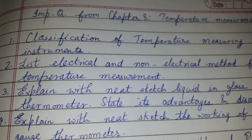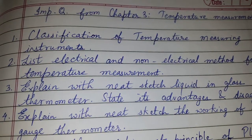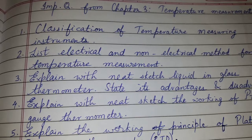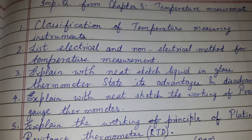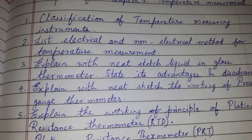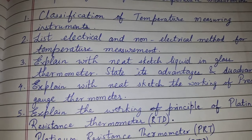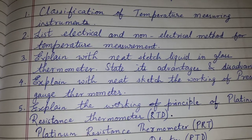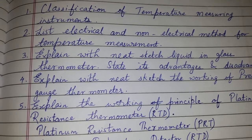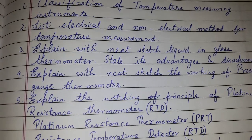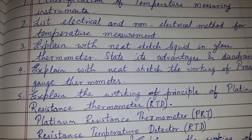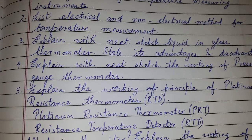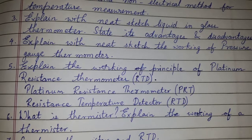Today's topic of discussion covers important questions from Chapter 3: temperature measurement. Topics include classification of temperature measuring instruments, a list of electrical and non-electrical methods for temperature measurement, and an explanation with neat sketch of the liquid-in-glass thermometer, including its advantages and disadvantages.